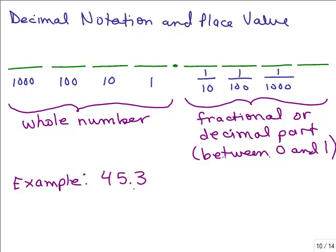If we have a number like 45.3, there's a whole number part before the decimal — that's 45 — and then there's a digit after the decimal. Notice the place values after the decimal point: the first place is one-tenth, the second is one-hundredth, the third is one-thousandth. An easy way to remember: it's a fraction where the number of places after the decimal equals the number of zeros in the denominator.